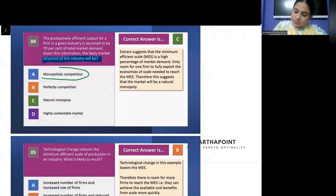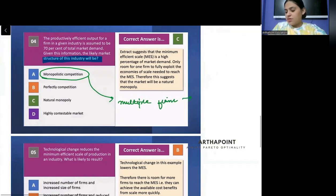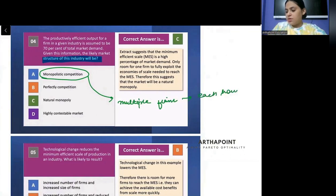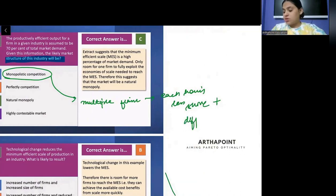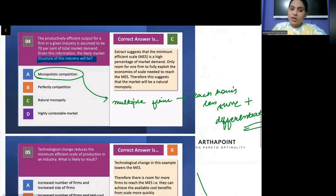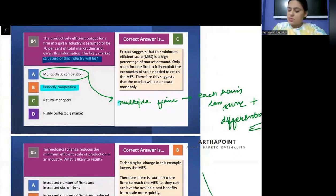Monopolistic market is a market where there are multiple firms, each having less share of the market but with differentiated products. But there are multiple forms in the market, not a single form. Perfect competition is also which has multiple forms. Contestable market has multiple forms.